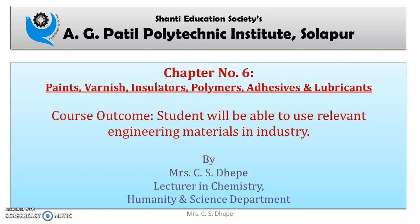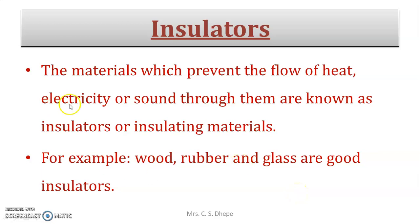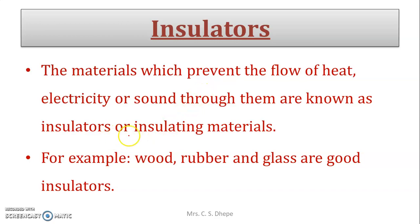Hello students. In this video we are going to cover the next part of this chapter, that is insulators. Insulators are materials which prevent the flow of heat, electricity, and sound through them. They are known as insulators or insulating material. Examples include wood, rubber, and glass. An insulator does not only restrict electricity but also prevents the flow of heat and sound.